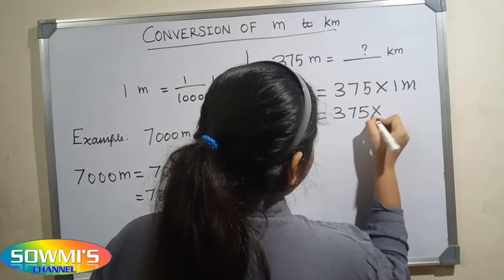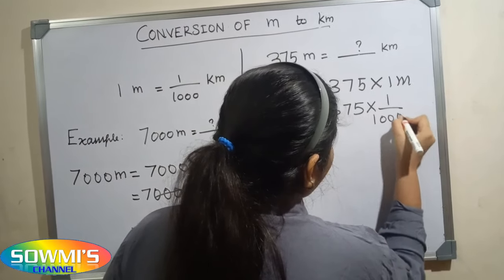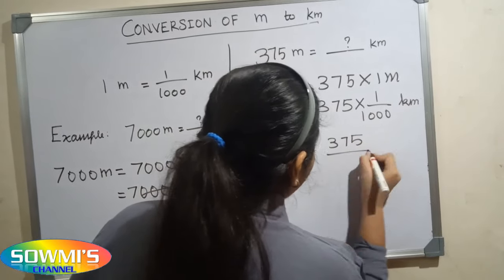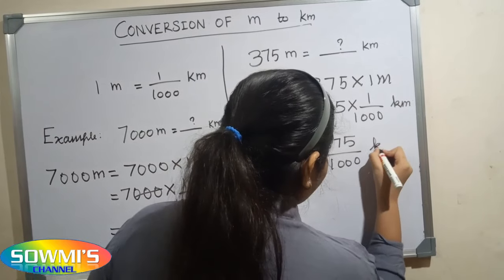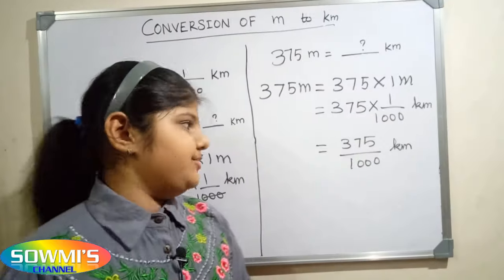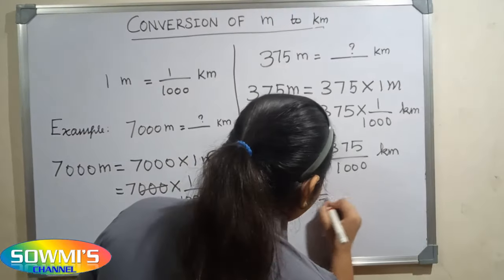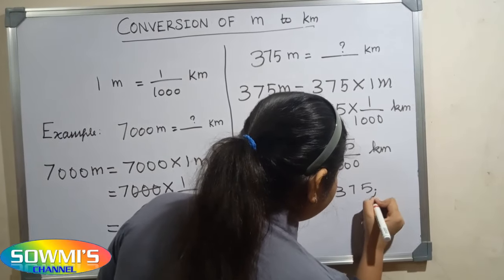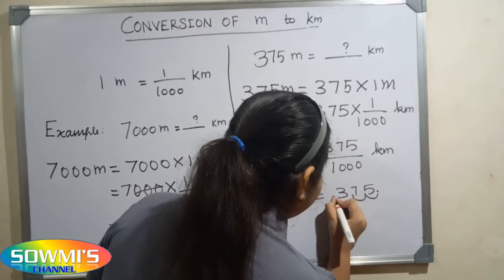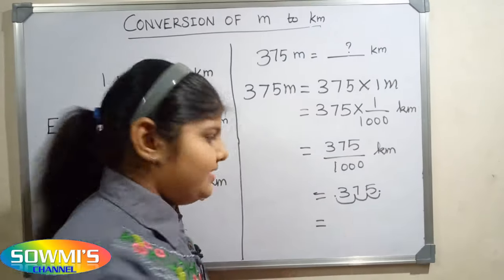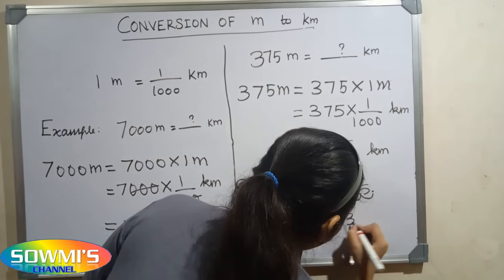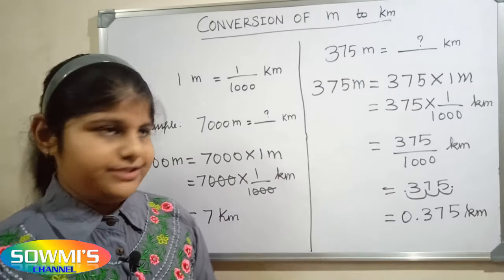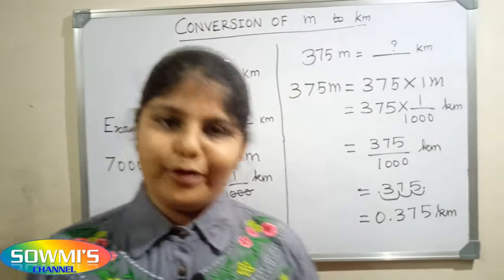So three hundred and seventy-five multiplied by one divided by one thousand gives three hundred and seventy-five over one thousand kilometers. The easy way to divide by one thousand is to move the decimal point three places to the left, so the answer is zero point three seven five kilometers. Hope you all understood the conversion of meters into kilometers.